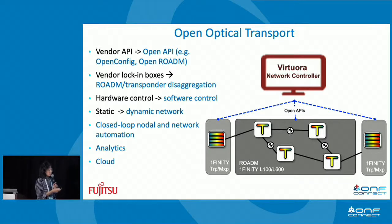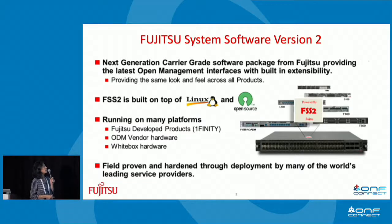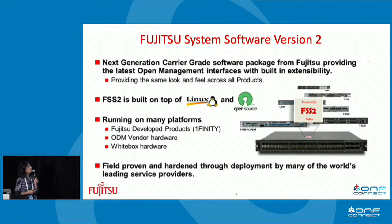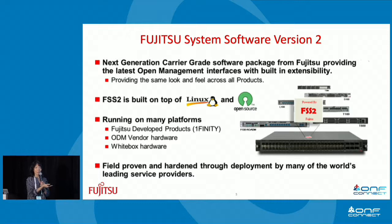One important part that enables Fujitsu boxes to be integrated into ONOS is FSS2 — Fujitsu System Software Generation 2. It's the next-generation carrier-grade software package from Fujitsu, providing the latest open management interface with built-in extensibility. It provides the same look and feel across ROADM devices, transponder devices, muxponder devices, and flex-muxponder devices. It can also be used for third-party boxes — white box or gray box — integrating with Fujitsu FSS2 and presenting the same look and feel northbound.